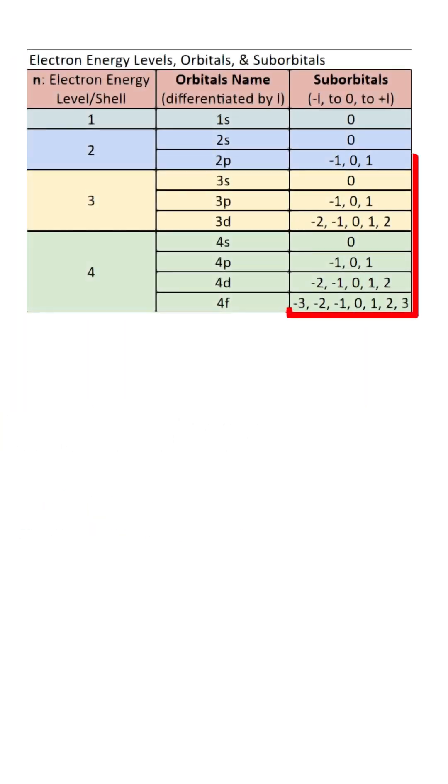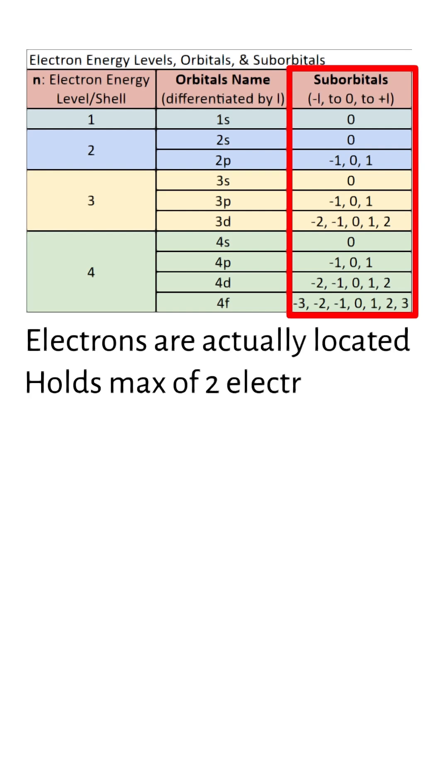Each type of orbital is divided into suborbitals, which are the specific regions where electrons are actually located, and each suborbital can hold a maximum of two electrons each.